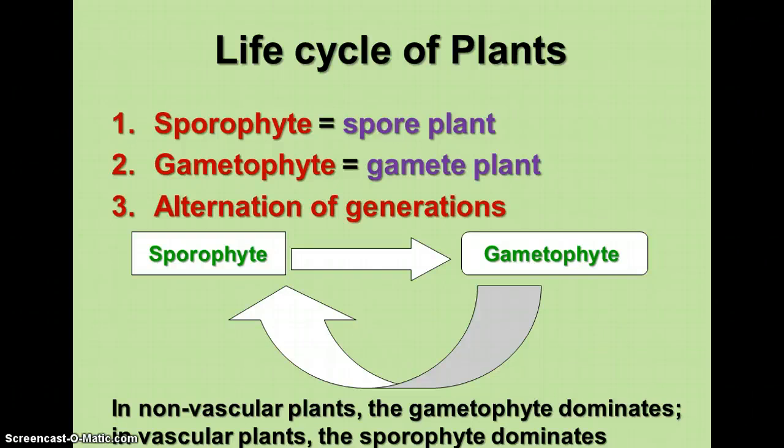Plants go through alternation of generations from a sporophyte to a gametophyte. In non-vascular plants, the gametophyte is the dominant phase of the life cycle. In vascular plants, the sporophyte dominates, and we'll talk a bit more about what that means in a minute.